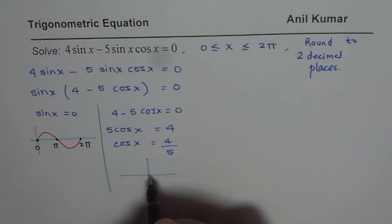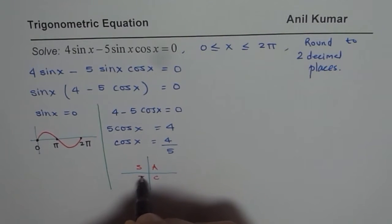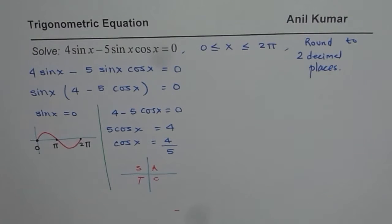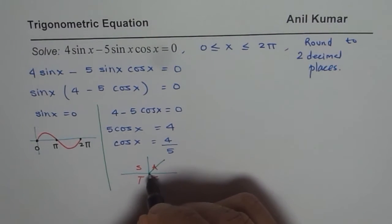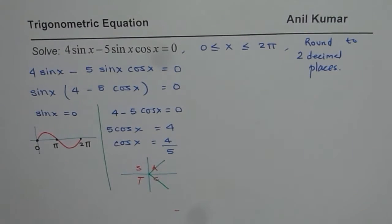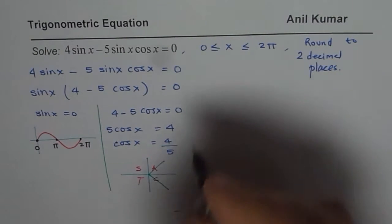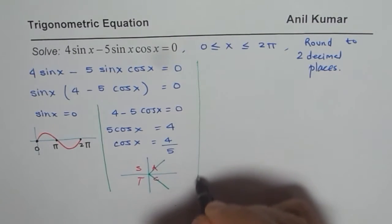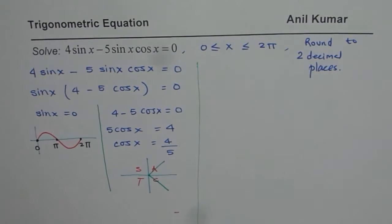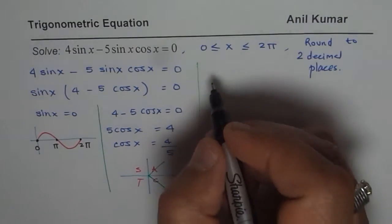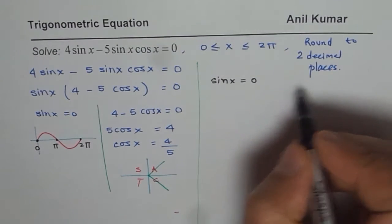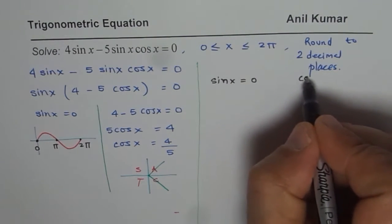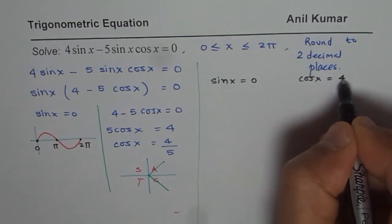Two solutions since we know the cos rule. So cos x is positive. Two solutions could be one in quadrant 1, the other one in quadrant 4. You get the point? So we are expecting two from here. So let me use the right half of the page and rewrite what I wrote here. So we are looking for a couple of solutions. One for sin x equals to 0. The other one we are looking for cos x equals to 4 over 5.